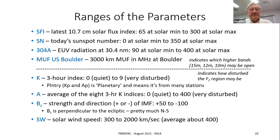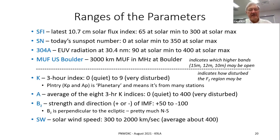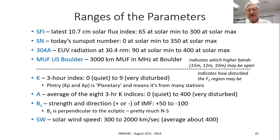The A index is a linear measurement — it's the average of the eight three-hour K indices and goes from zero to 400. B_z is the strength and direction of the interplanetary magnetic field — the sun's magnetic field — going from about plus 50 to minus 100 generally. The Z component is perpendicular to the ecliptic, roughly north-south, which lines up with the Earth's magnetic field and tells us how well the interplanetary magnetic field is coupling into it. SW is the solar wind speed, ranging from 300 and can get up to 2,000 kilometers per second; on average it's about 400.